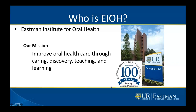So who is Eastman Institute for Oral Health, or EIOH? We improve oral health care through caring, discovery, teaching, and learning. We have been around for over 100 years, originally named the Rochester Dental Dispensary, renamed Eastman Dental Dispensary in 1942. In 1978, we moved to our current address at 625 Elmwood Avenue in Rochester, New York. In 1997, we became partners with the University of Rochester Medical Center. In 2009, we renamed ourselves the Eastman Institute for Oral Health. A map is included in your handouts.